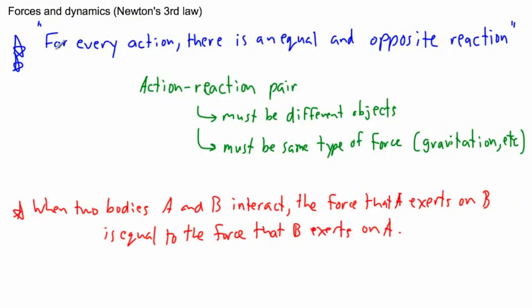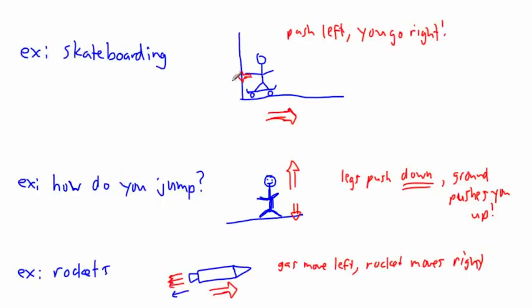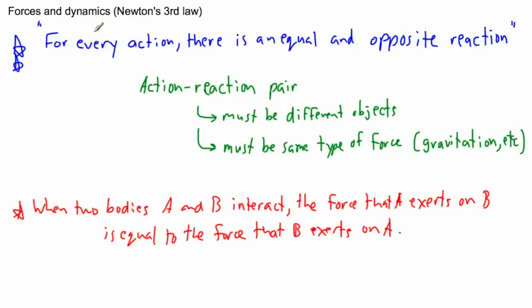To summarize: Newton's third law says every action has an equal and opposite reaction. If you do one thing, the opposite force is applied back. The force one object exerts on another is the same as the force the other exerts on the first. This explains skateboarding — push one way, go the other; jumping — push down, go up; rockets — spit stuff out one side, go the other. Newton's third law has a huge number of practical real-world examples.